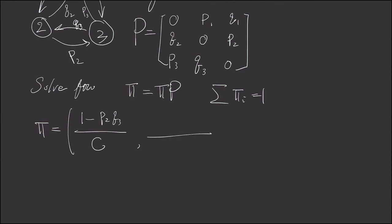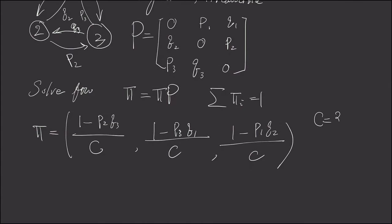And the second one is (1 minus P3Q1) divided by C, and the last one is (1 minus P1Q2) divided by C. The C is defined by C equals 3 minus P2Q3 subtract P3Q1 subtract P1Q2. It's just the sum of the numerator.